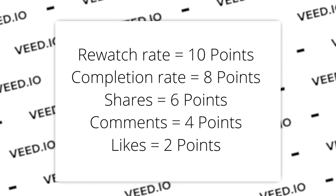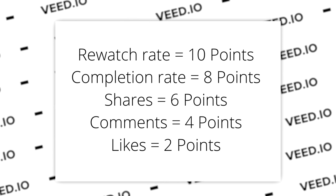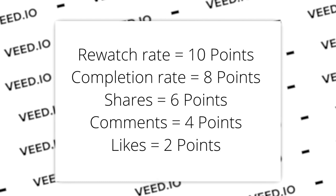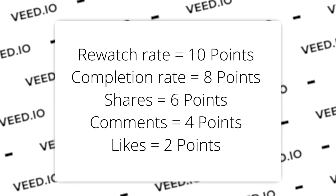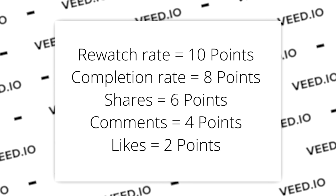Once TikTok knows the basics about your video, it boosts it to a small number of users. Then an evaluation happens of how those users interact with it. Each interaction is a tracked metric with an associated score that varies in value. Here's our estimated value scoreboard: rewatch is worth 10 points, video completion 8 points, shares 6 points, comments 4 points, and likes 2 points. The rewatch and completion rates are the top metrics, juxtaposed to likes and comments being the least. Leaving your video on a loop won't help it go viral — these metrics are calculated per user, which makes click farms redundant.